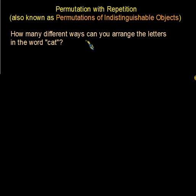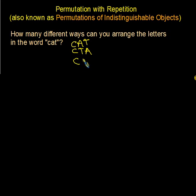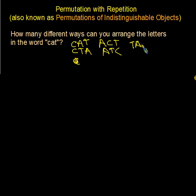Alright, I'm back. So here I'll help you out. Hopefully we agree: C-A-T is one arrangement. Going methodically, C-T-A — there are only two choices with C in front. So let's try A in front: A-C-T and A-T-C. And then there are two choices with T in front: T-A-C and T-C-A.